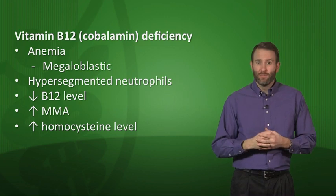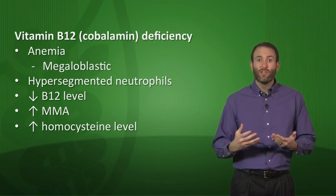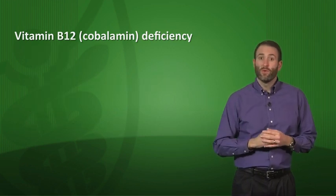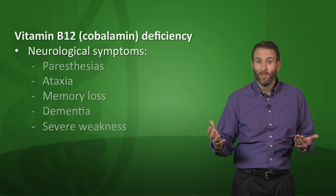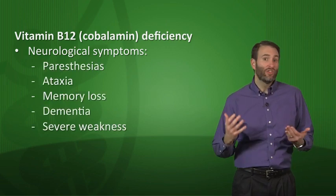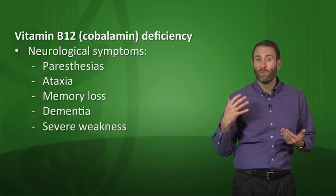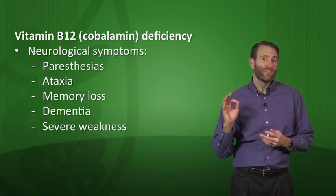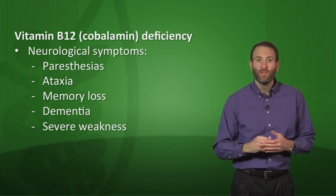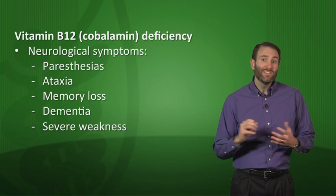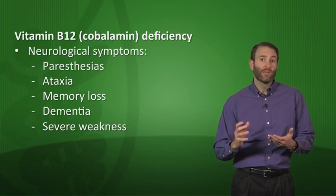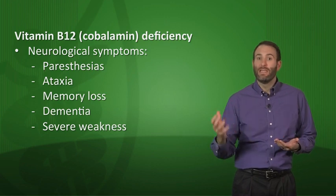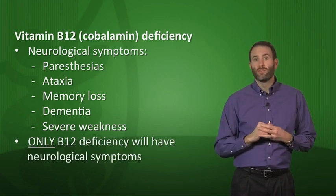Additional symptoms of B12 deficiency include neurological findings: paresthesias, ataxia due to loss of vibration and position sense, memory loss, dementia, and severe weakness. Many of these symptoms are linked to a defect in myelin formation that can occur with B12 deficiency. This is a key differentiating characteristic from folate deficiency — both B12 and folate cause megaloblastic anemia, but only B12 deficiency causes neurological symptoms as well.